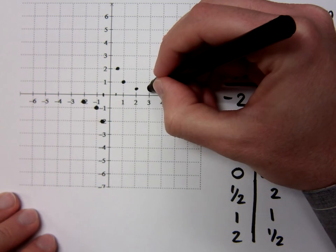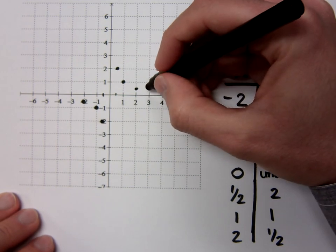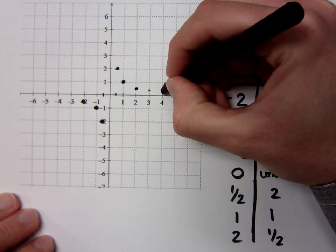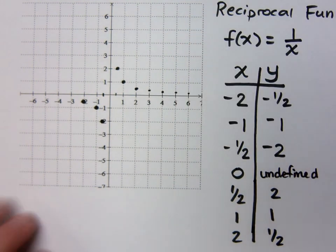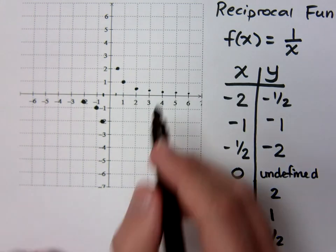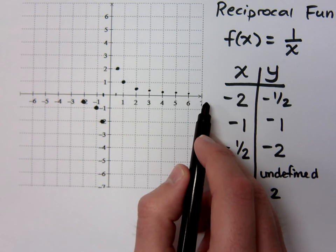What if you did 3, what would you get? You'd get 1 third, then you'd get 1 fourth, and 1 fifth, and 1 sixth, and so on, right? As you go out further and further here on the x, these values are doing what? They will not be able to cross the x-axis, but they'll get closer and closer and closer to that, right?